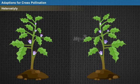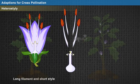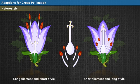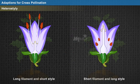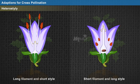Heterostyly: in some bisexual plants, there exists a difference in the length of the style and filament — that is, long filament and short style, or short filament and long style. Hence, these plants depend on cross-pollination for reproduction. This type of adaptation can be seen in primrose.